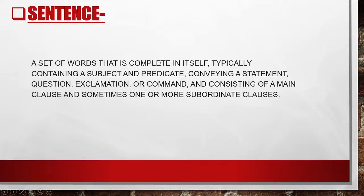Sentences are a group of words that is complete in itself — we discussed this in our last class. A sentence typically contains a subject and a predicate. For example, 'Go' — 'you go' is a sentence because 'you' is the subject and 'go' is the predicate. So the two components of a sentence are subject and predicate, but we can further divide it into three parts: subject, verb, and object.